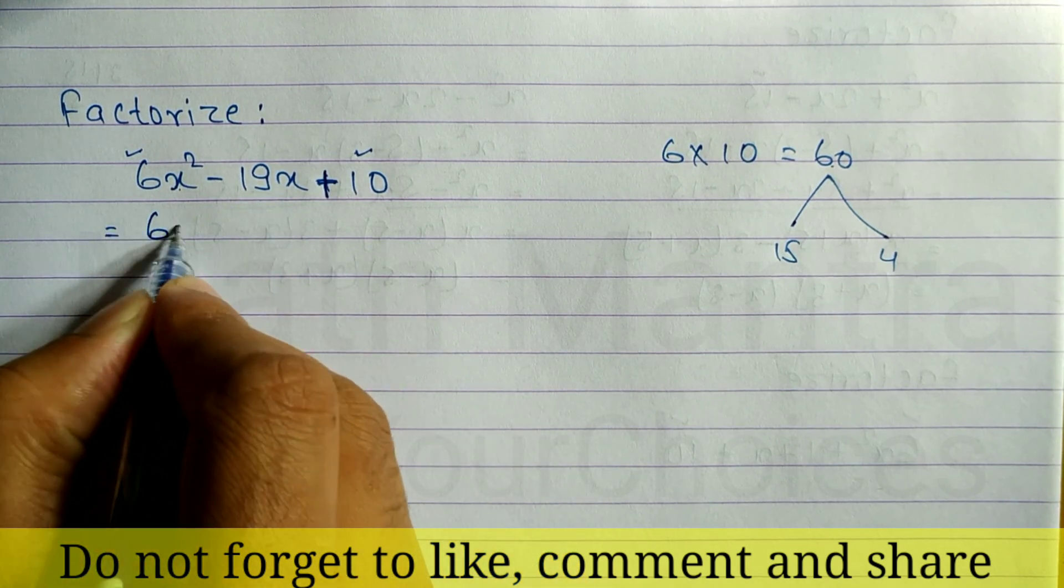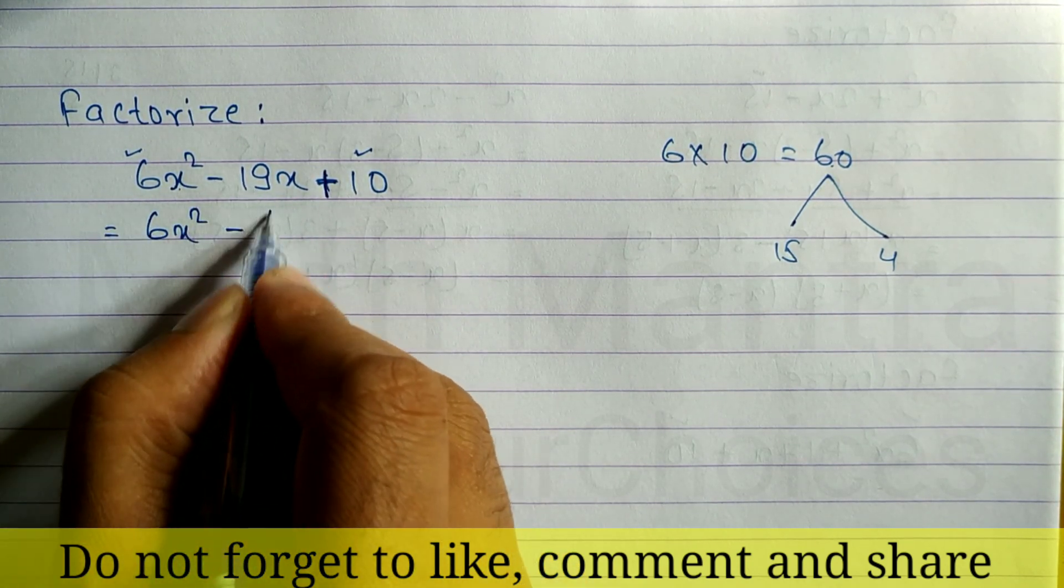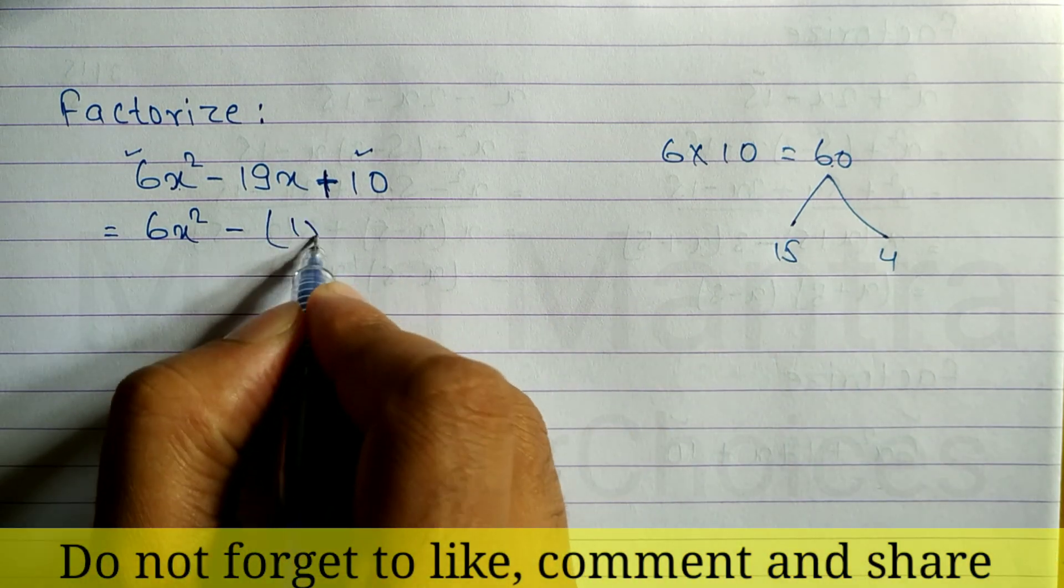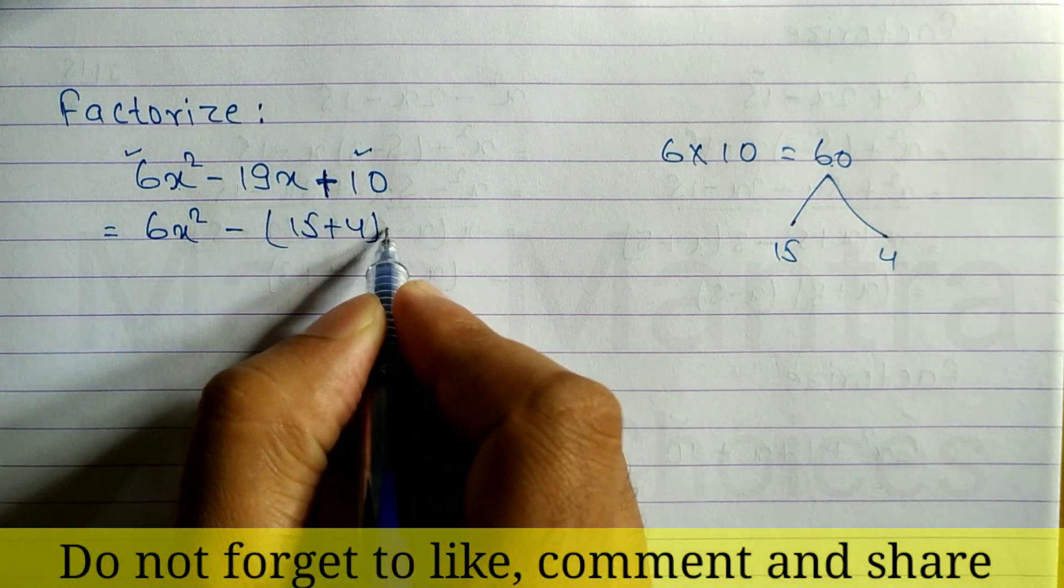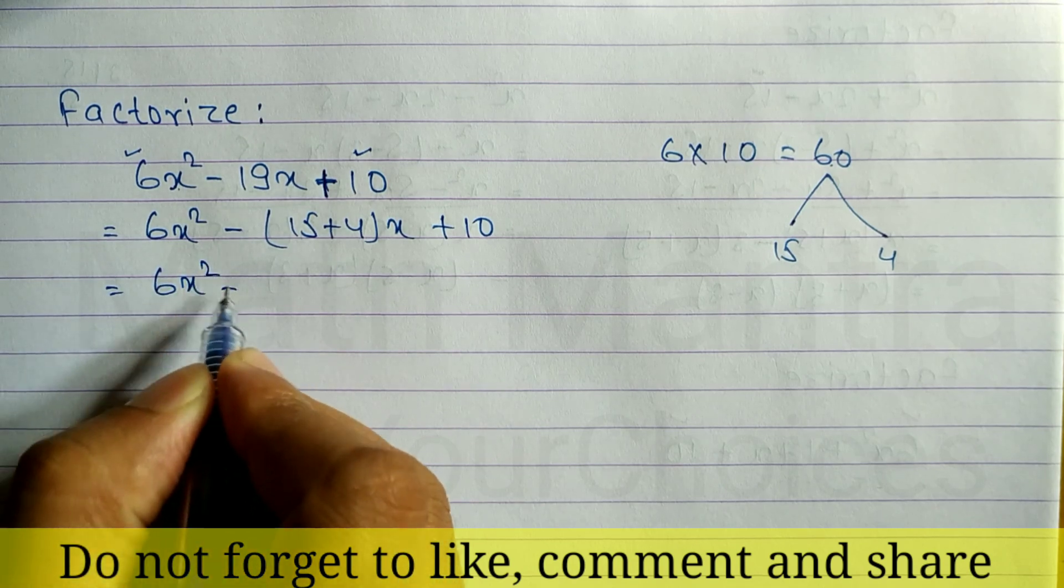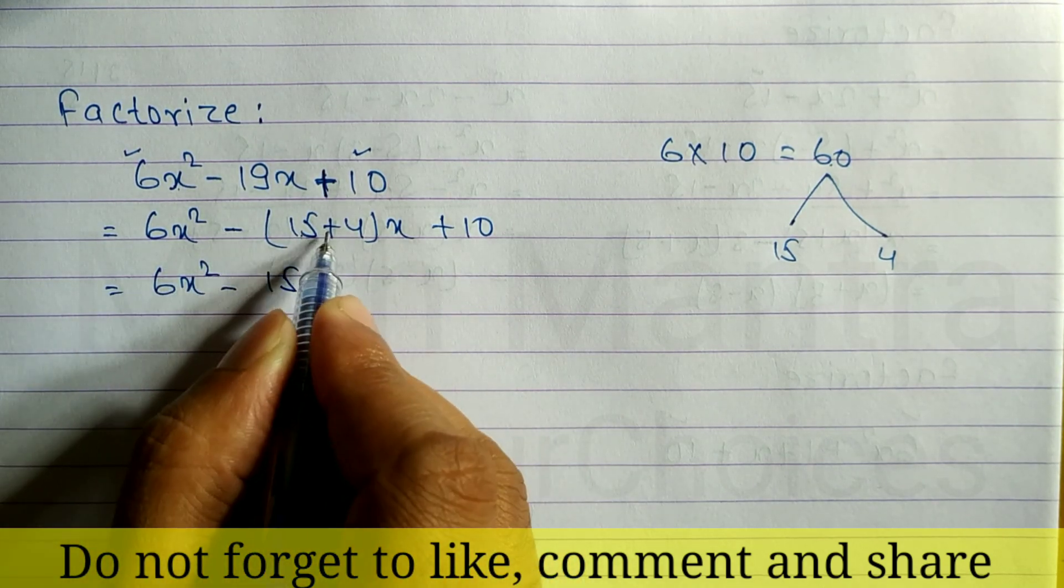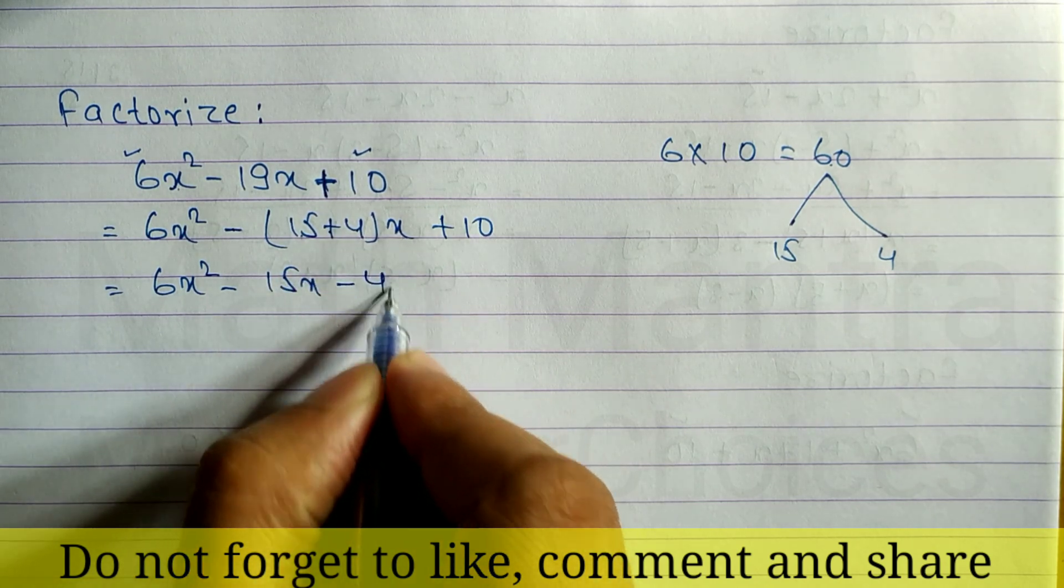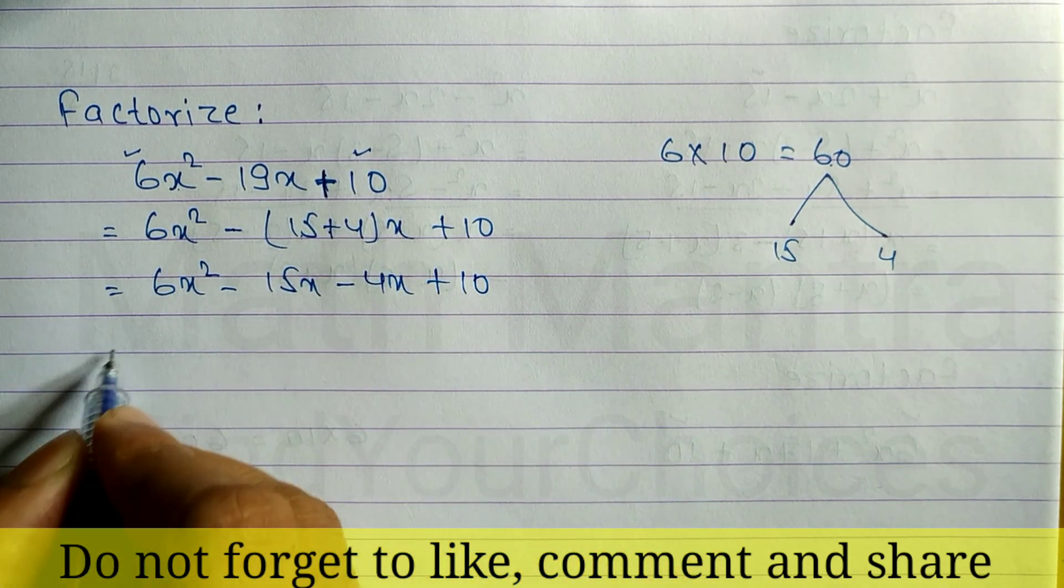We can write here 6x² minus, in the place of 19, we have to write 15 plus 4, times x, plus 10. Now, 6x² - 15x - 4x + 10.